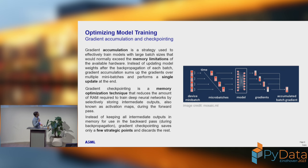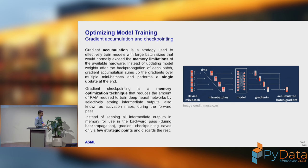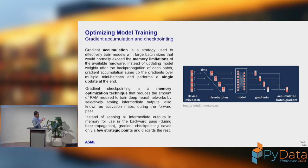Another technique is gradient accumulation. This doesn't really save anything; it's more about overcoming the limitation of your particular compute. Say you have one GPU but you really want a big batch size — you can't live with batch size 8, you need 64. So you chunk your batches into mini-batches, accumulate the gradients, and only update when you reach your effective batch size. You can go to very large batch sizes and it helps better convergence, but it's not speeding things up — it's just overcoming the limitation.